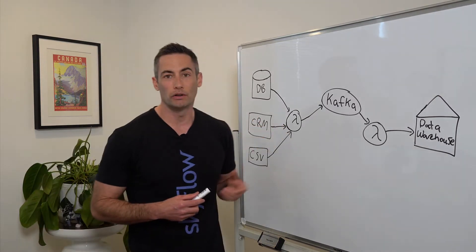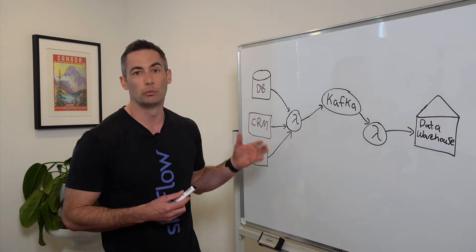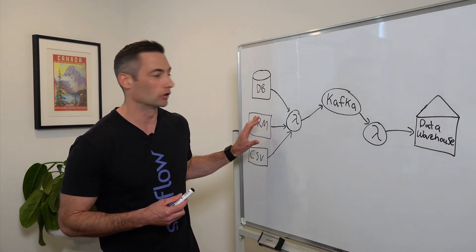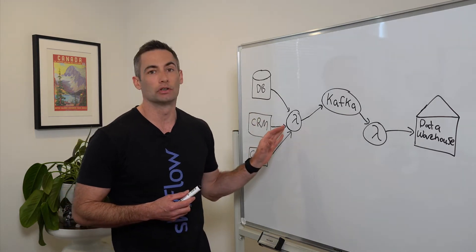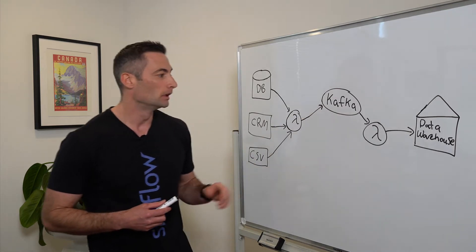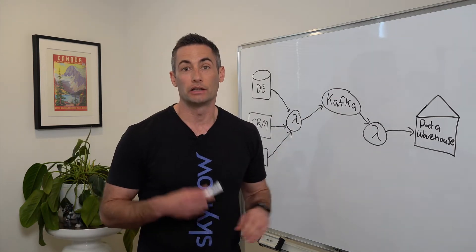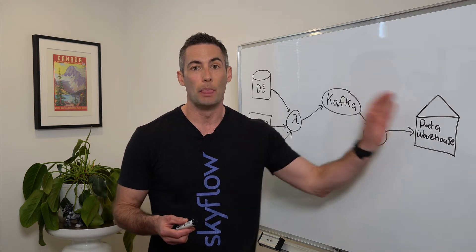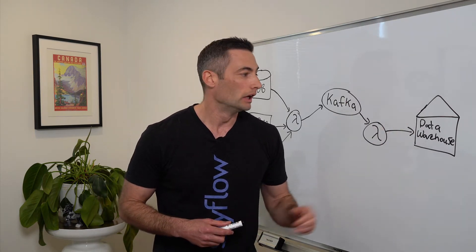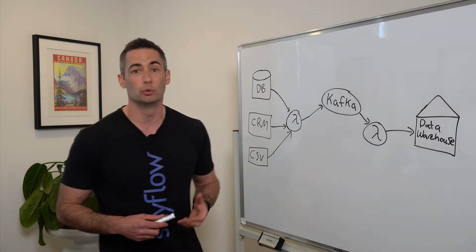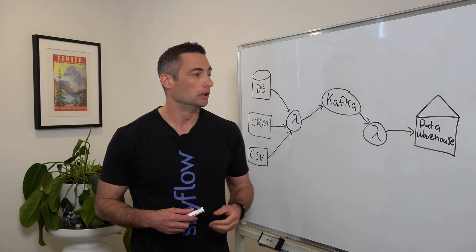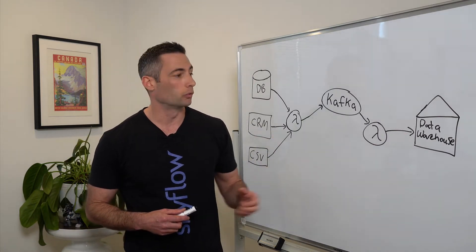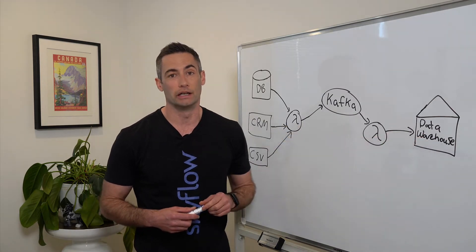We have an AWS Lambda function that gets triggered whenever new data gets added to any of our sources, and then the Lambda function writes that data into a Kafka stream. We have another Lambda function that is a consumer for the Kafka stream, takes the events from the event log, pushes the data into our data warehouse. And then we probably have things like BI tools, marketing automation, data analytics, and so forth that depend on the data in the data warehouse.